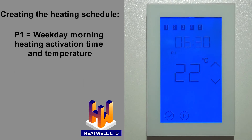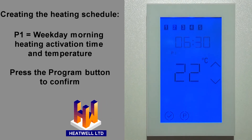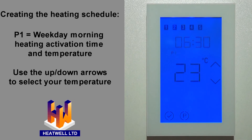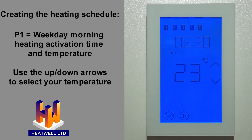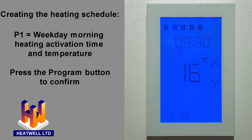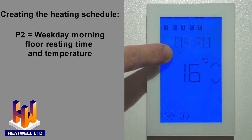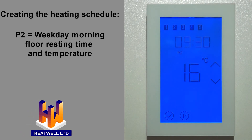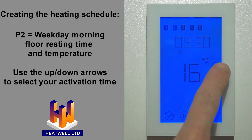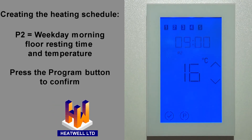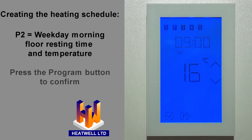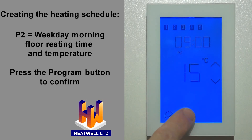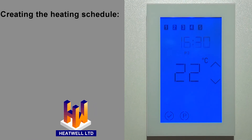When you have your time selected, press the program button. Now we'll select the chosen floor temperature for that time — in this case, 23 degrees. Once you've chosen your preferred temperature, press the program button again. Your first weekday activation time and temperature has been set. Now P2 will be displayed. P2 is your weekday switch off or resting temperature and time for when you've left home to go to work. In this case, we'll select 9 a.m., then press the program button, and then select the resting floor temperature — in this case, 15 degrees. Once you've chosen your preferred temperature, press the program button. The P2 resting floor temperature has been set.